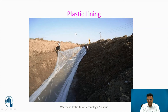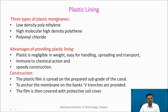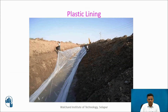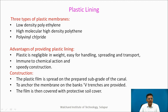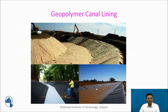Plastic lining uses three types of plastic membranes: low density polyethylene, high molecular high density polyethylene, and polyvinyl chloride. Advantages of plastic lining include being negligible in weight, easy to handle, spread, and transport. It is immune to chemical action and gives speed of construction. The plastic film is spread on the prepared subgrade of the canal. To anchor the membranes on the banks, V-trenches are provided, and the film is then covered with a protective soil cover. This is geopolymer canal lining from the same category.